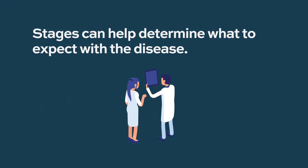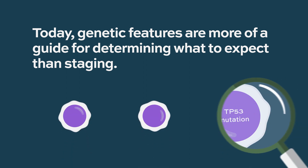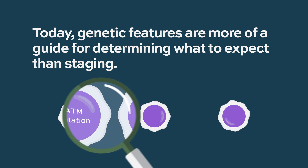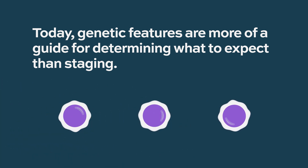This staging mainly takes into consideration whether you have enlarged lymph nodes, an enlarged spleen, or more involvement of the disease causing problems in your bone marrow with low hemoglobin or low platelets. So staging can guide us on what to expect from the disease. But more than staging today, what we really use are genetic features — molecular changes and mutations that are specific findings guiding us on how we expect the disease to behave.